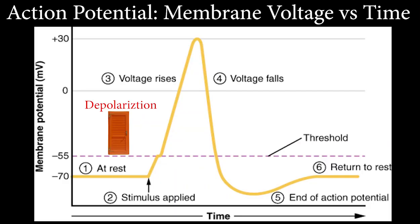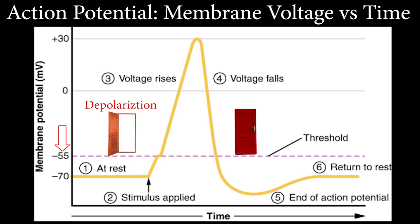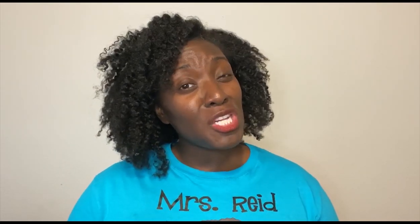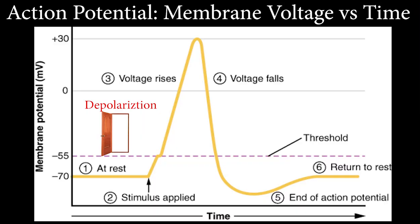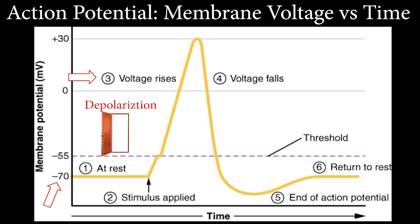The voltage-gated channels open or close based on the voltage across the neuron's cell membrane. The threshold of negative 55 millivolts activates the voltage-gated sodium channel. At threshold, the voltage-gated potassium channel is triggered as well, but since potassium channels open and close slowly, only a few potassium ions leave the party. Now that the voltage-gated sodium channel is open, rapid depolarization occurs and the membrane potential changes from negative 70 millivolts to a positive value. The voltage-gated sodium channels only stay open for about one millisecond, then they close, allowing the voltage to reach a peak of positive 30 millivolts.